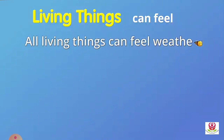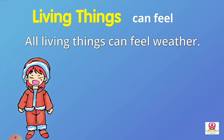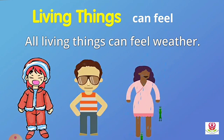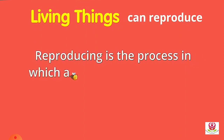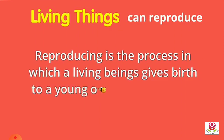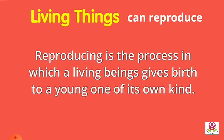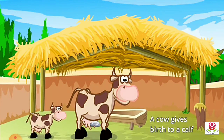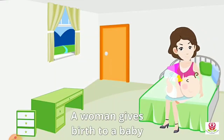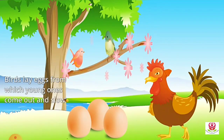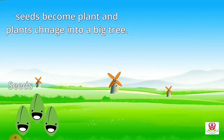Living things can feel the weather — when it is cold or when it is the rainy season, we come to know. Living things can also reproduce. Reproducing is the process in which living beings give birth to their young ones. A cow gives birth to a calf, a woman gives birth to a baby, birds lay eggs from which young ones hatch, and seeds become plants that grow into big trees.